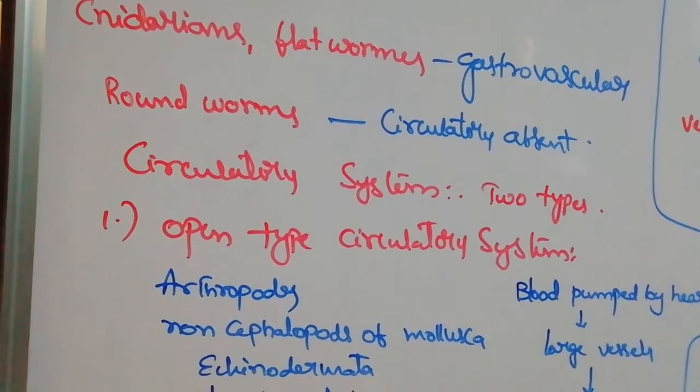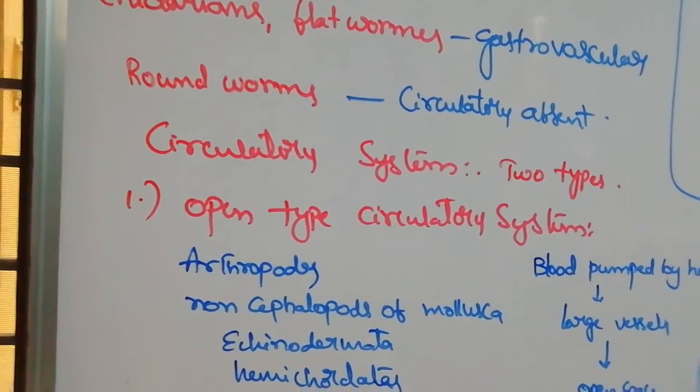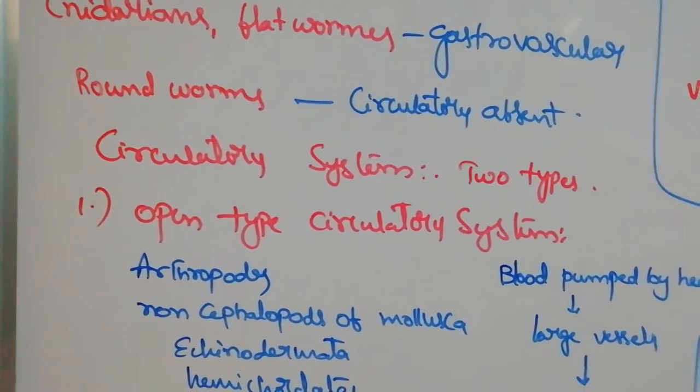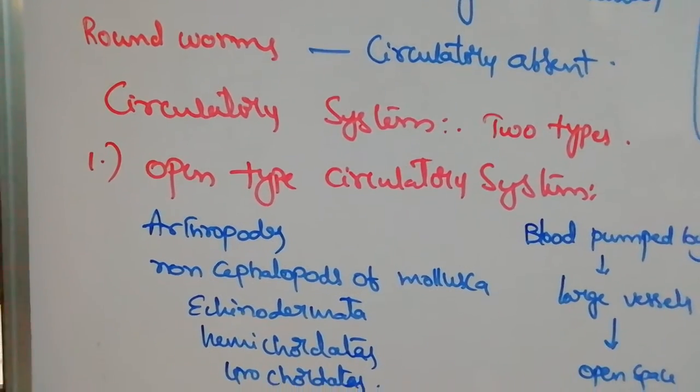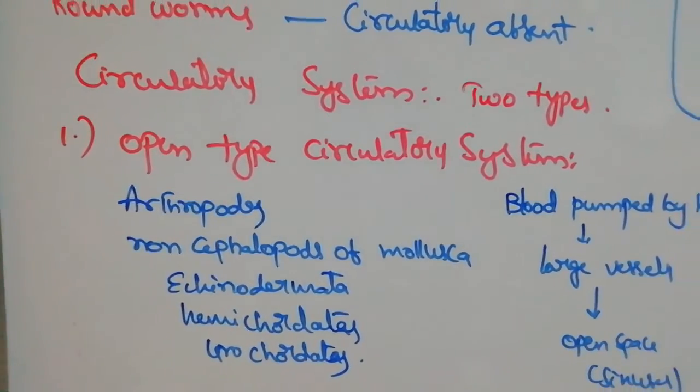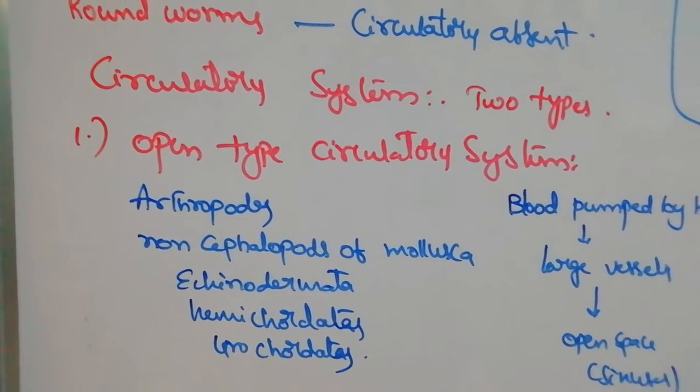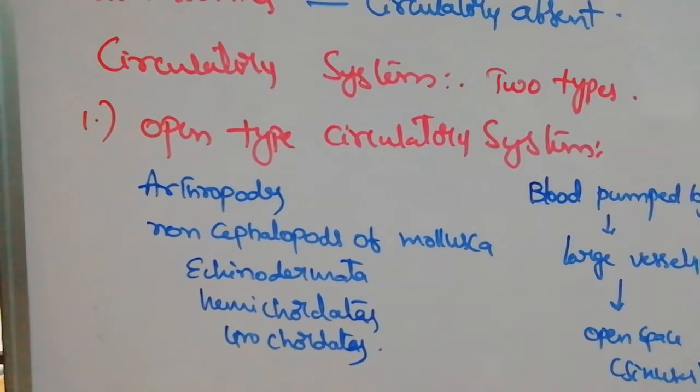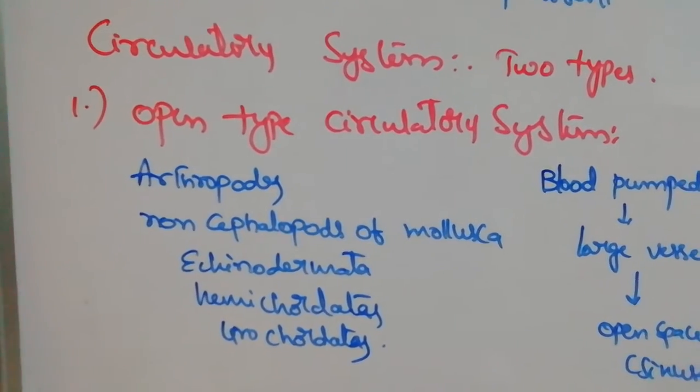In roundworms, circulatory system is absent. Pseudocoelom is present, through that coelomic fluid only transportation and excretion takes place. Now come to the circulatory system. It is two types: open type of circulatory system and closed type of circulatory system.